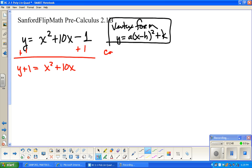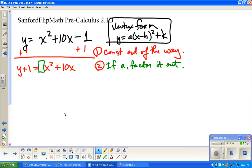Here we go. First step, get the constant out of the way. Second step, if there's an a, if there's a number in front of the x squared, factor it out. Third step, complete the square and balance. In that very same step, you have to do everything on both sides. So here's the complete the square thing: you're going to do b over 2 squared.